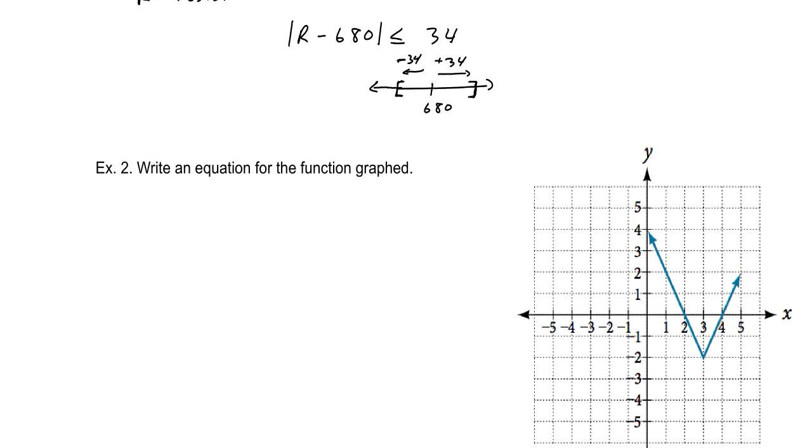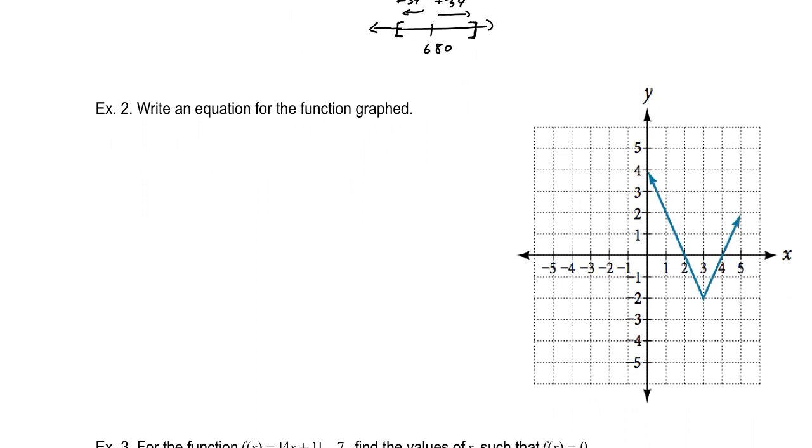Example 2 is write an equation for the function graphed. This is a slight turn. Now we know that an absolute value function, based on our toolkit functions and our transformations from the last section, are going to be of this form: a times the absolute value of x minus h plus k, where h and k are how it is shifted left, right, up, and down, and a is a vertical stretch or shrink.